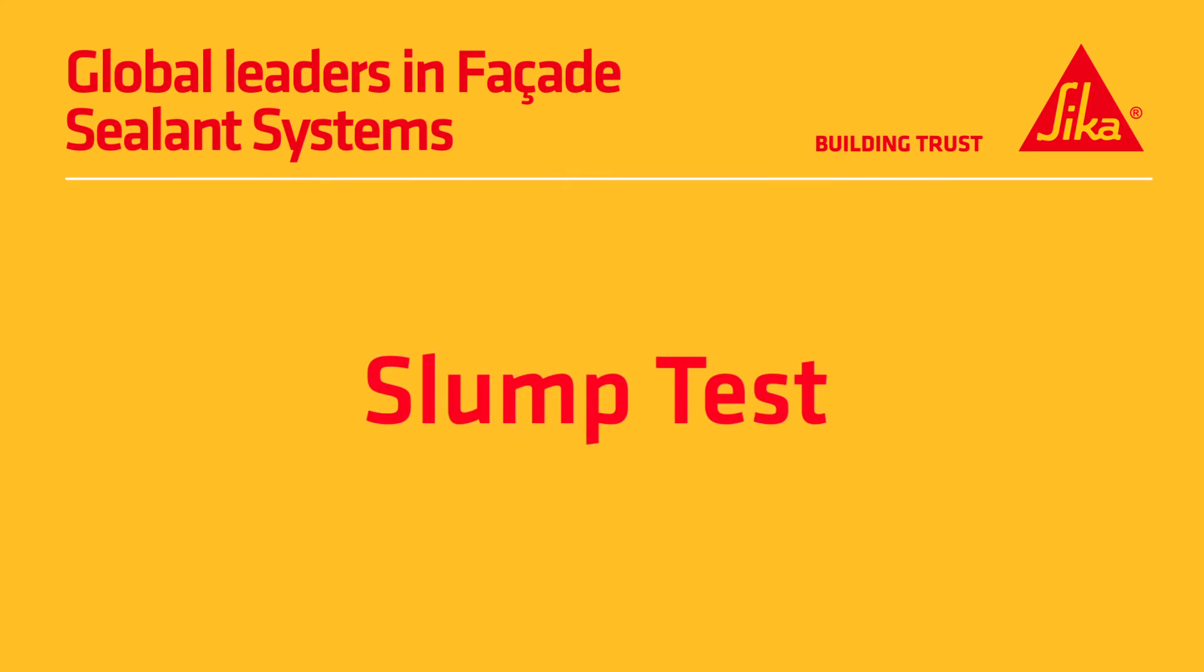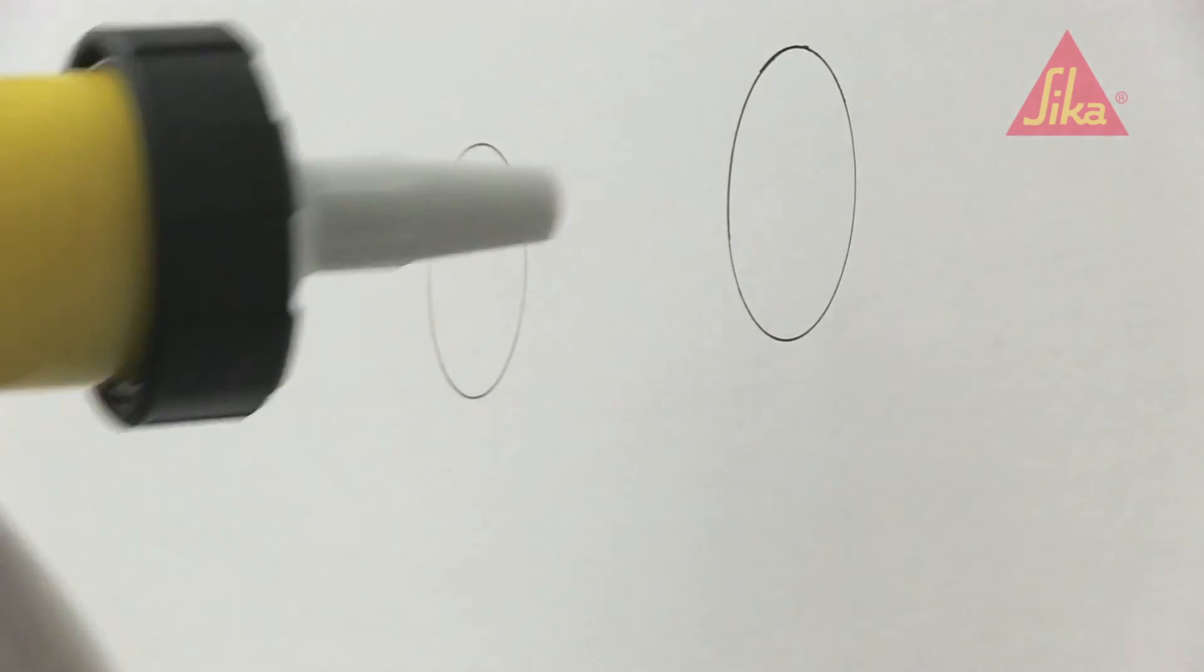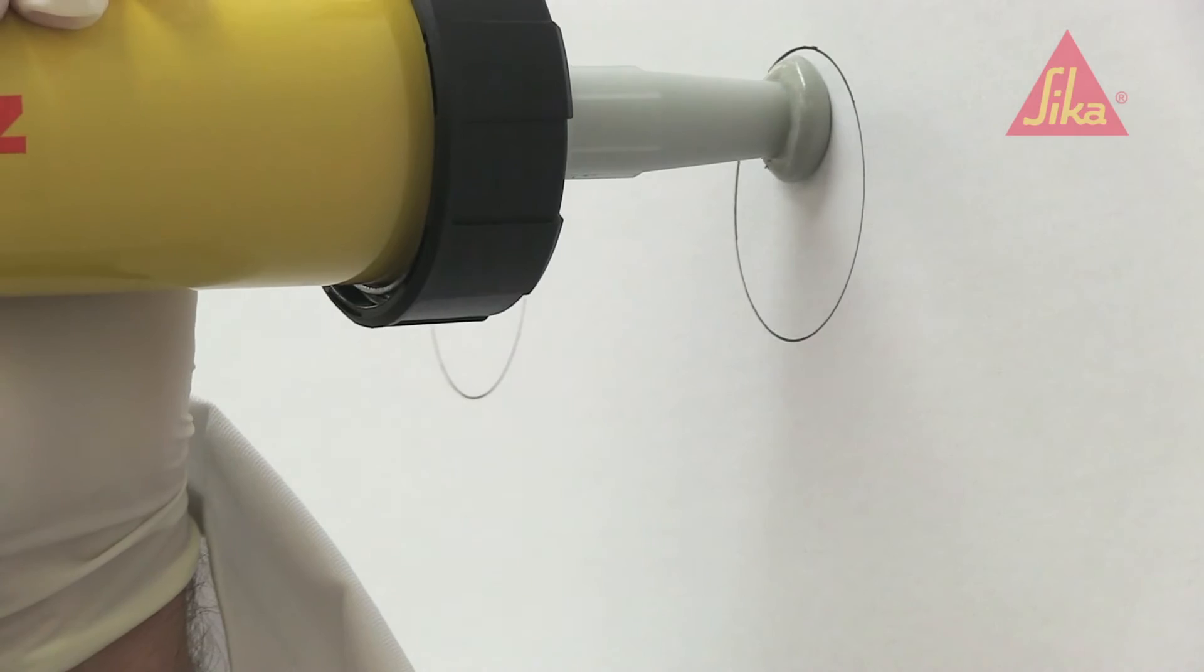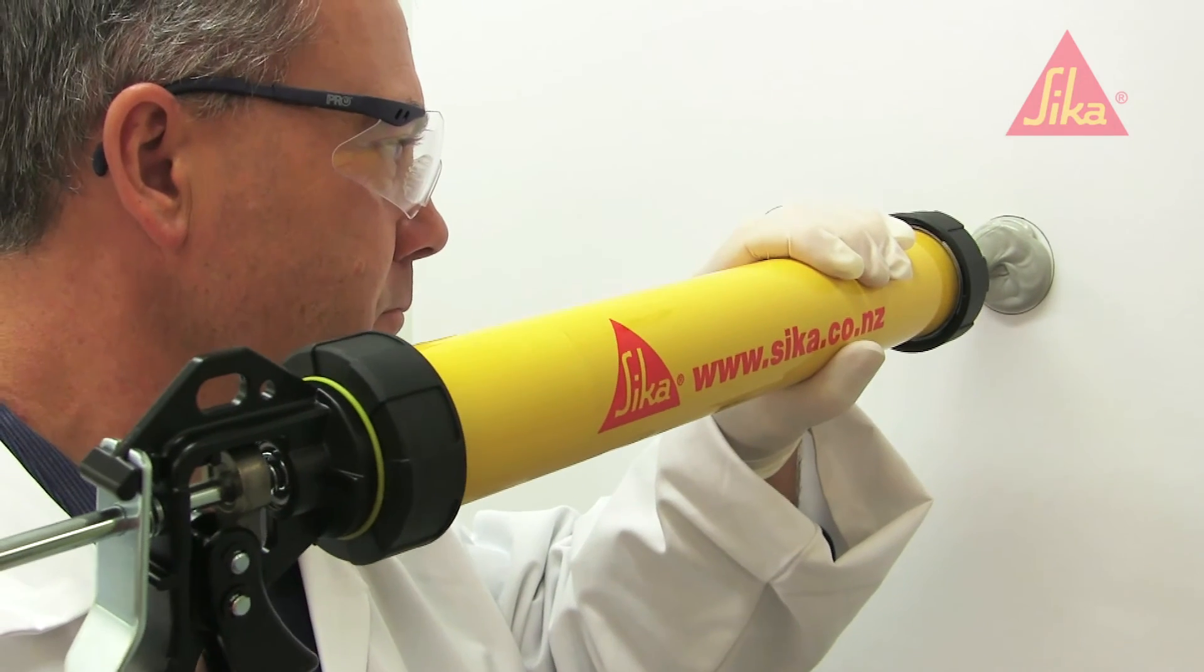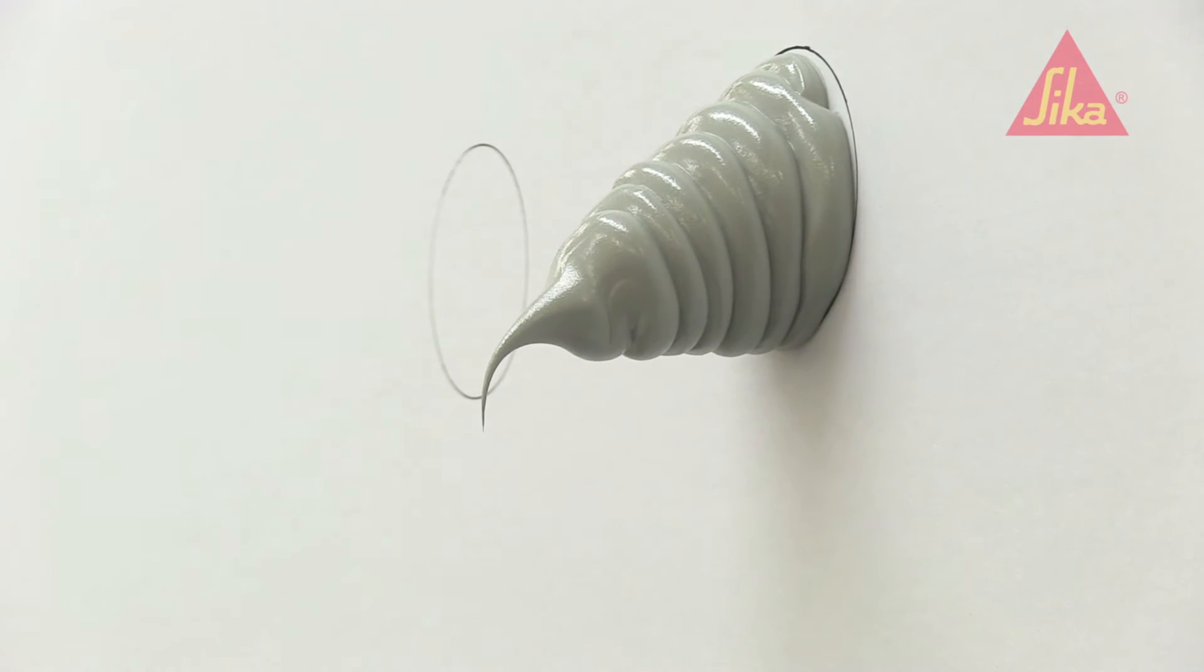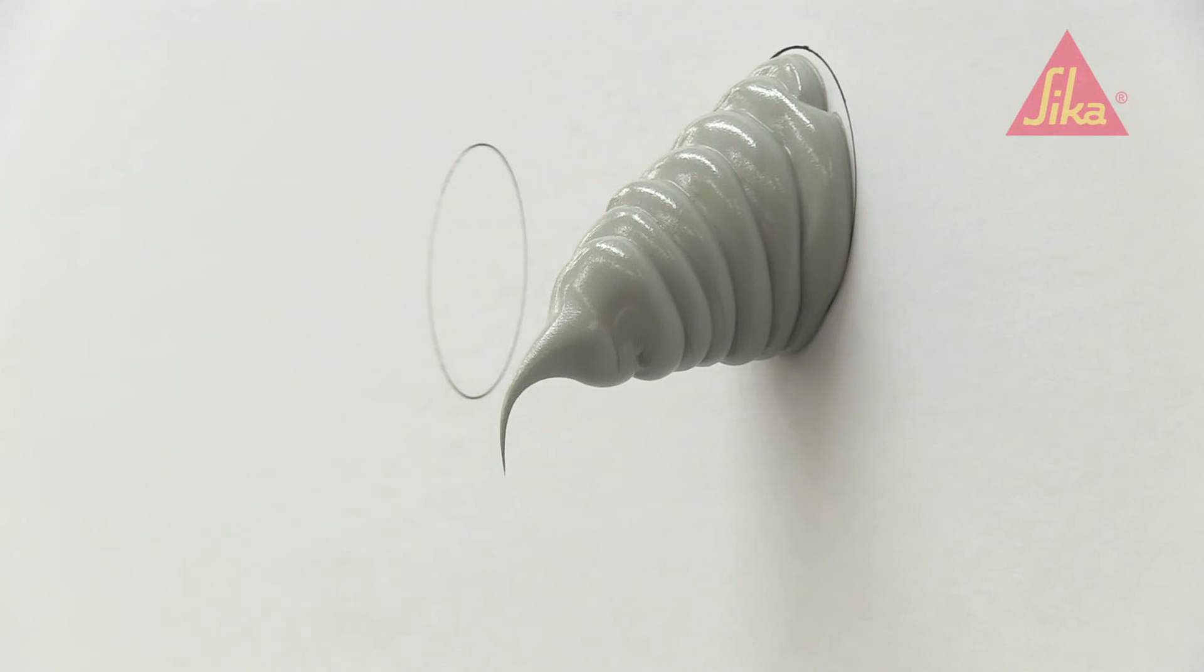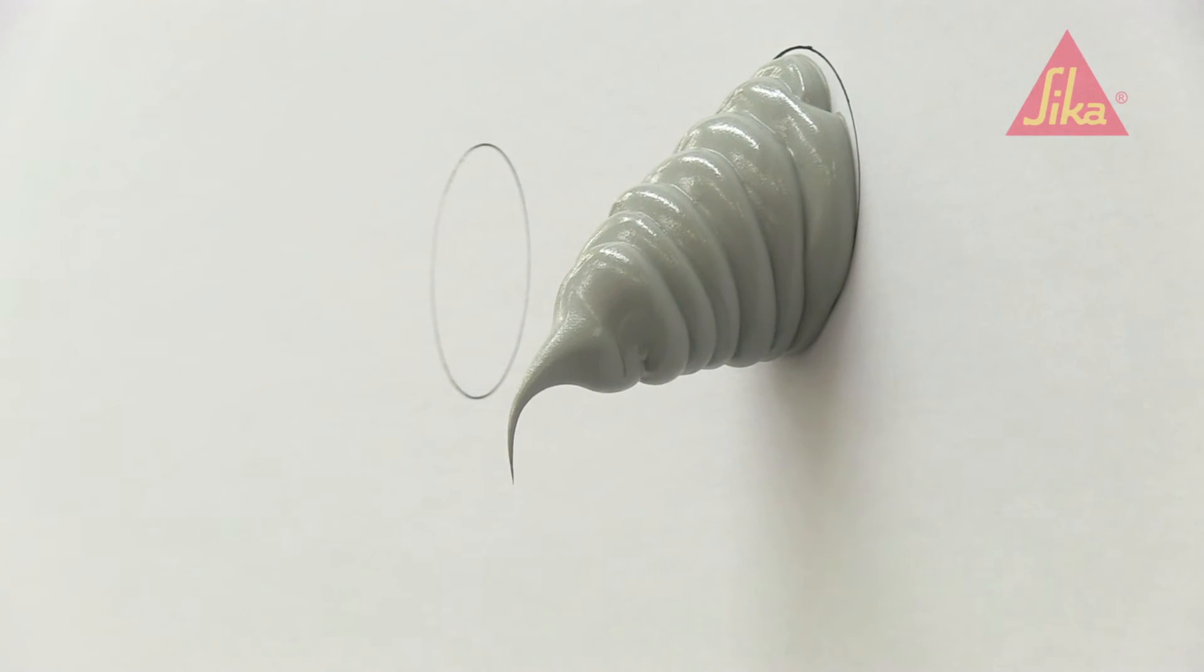Our final test was to demonstrate how user-friendly new 250 façade is for applicators. First, we applied a spiral of a competitor's façade sealant. It started to droop immediately, and that could cause real problems for applicators on site when the sealant starts sagging out of joints. Not the best result if you want a professional finish.